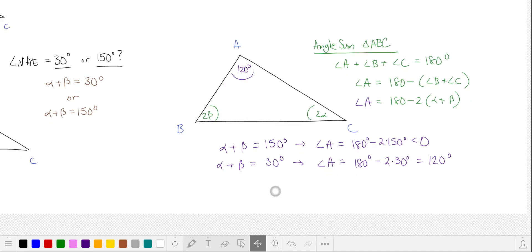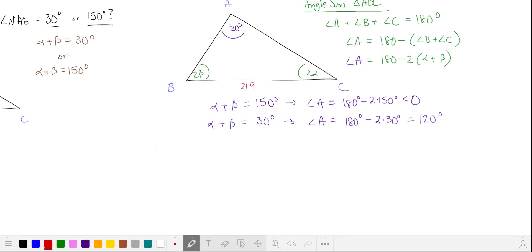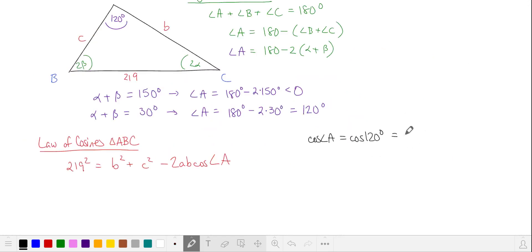We want to find the perimeter of triangle ABC, so let's use the law of cosines. Cosine of 120 degrees is negative one half. So this simplifies to b² plus b times c plus c² is equal to 219, where the side lengths b and c are also integers.